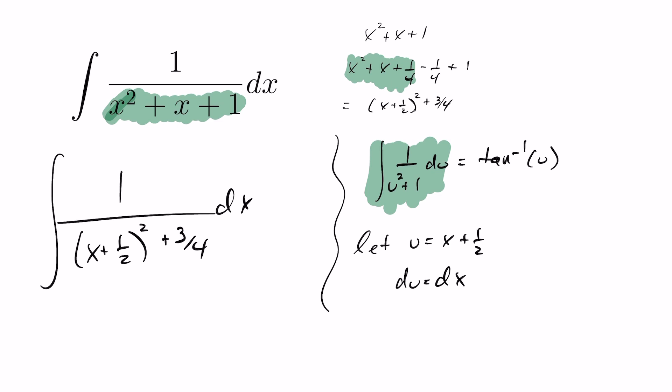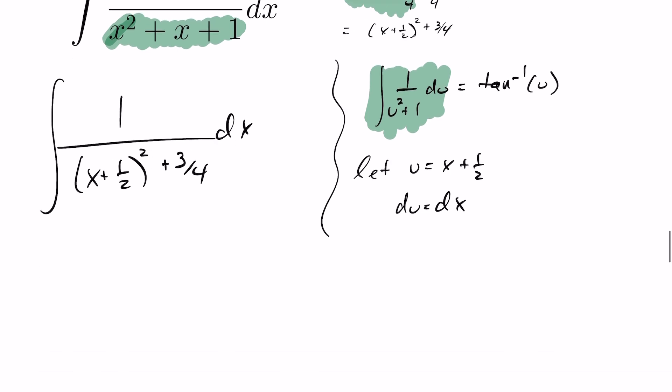And if I do that, I end up transforming my integral to the following. This will be the integral of 1 over u squared plus 3 quarters, which is still not what we want. And the dx becomes a du in this case.